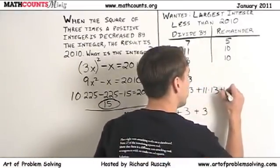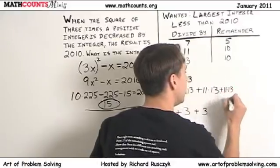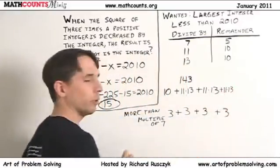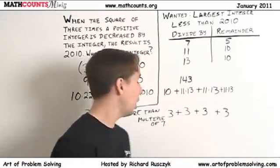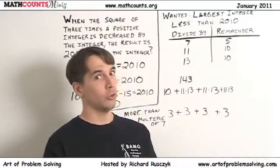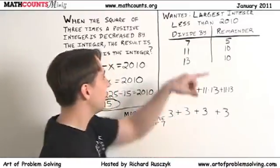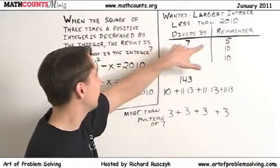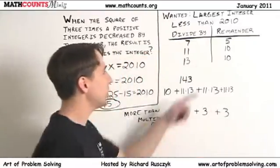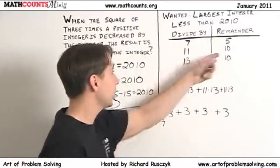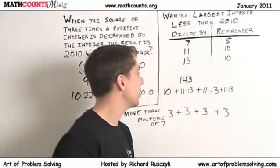So I need to keep going. I'm going to add on another 11 times 13. That gives me another 3 more than a multiple of 7. So now I'm 3 plus 3 plus 3 plus 3. That's 12. 12 more than a multiple of 7 is also 5 more than a multiple of 7. I've got it. That's 5 more than a multiple of 7. So if I divide this number by 7, I'll get a remainder of 5. If I divide it by 11, I'll get a remainder of 10. If I divide it by 13, I'll get a remainder of 10. Yes!